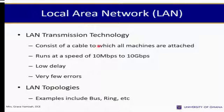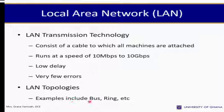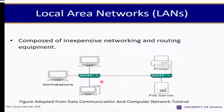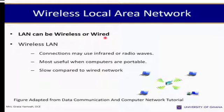LAN transmission technology consists of a cable to which all machines are attached. LANs operate at speeds of 10 megabits per second to 10 gigabits per second, with slow delay and very few errors. LAN topologies include bus and ring. A typical setup is composed of inexpensive networking and routing equipment — workstations, hubs, and printers. LAN can be wireless or wired; wireless LAN connections may use infrared or radio waves, most useful when computers are portable, though slower than wired networks.